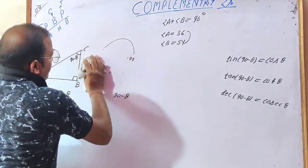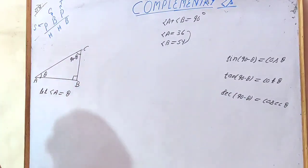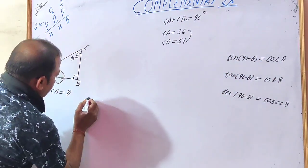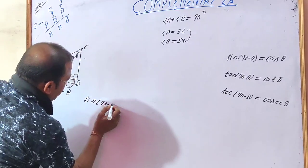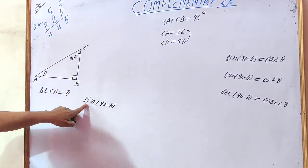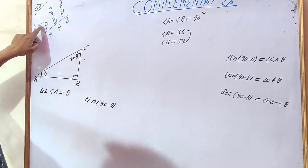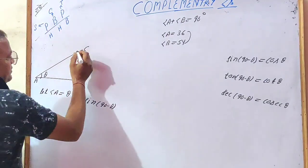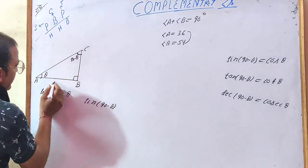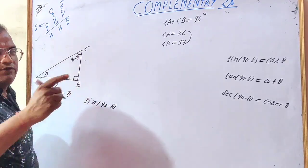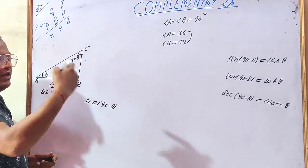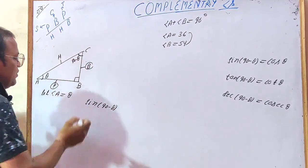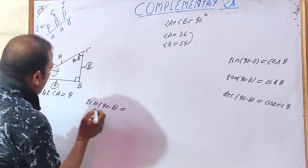Now we have to verify the relation: sine(90 minus theta) is equal to cos theta. The sine ratio is perpendicular upon hypotenuse. The angle here is 90 minus theta. Since this angle is at C, the side opposite to it is the perpendicular, as the side opposite to the acute angle is always perpendicular. So sine(90 minus theta) equals AB upon AC.